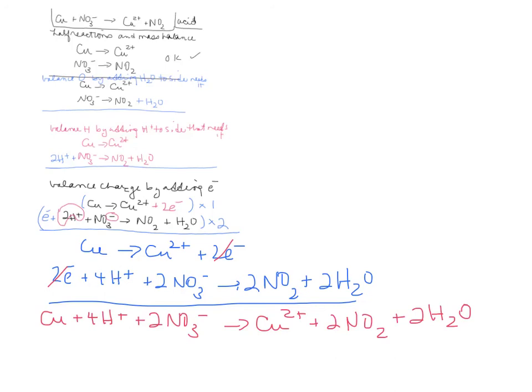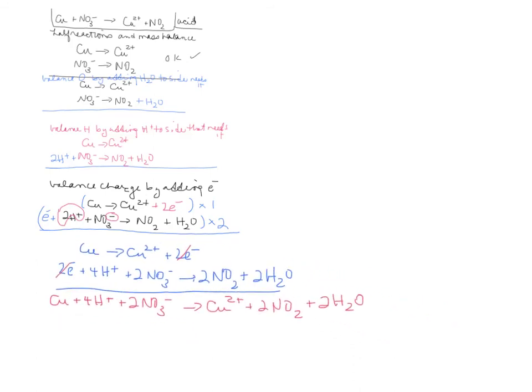That should be balanced. And finally, we want to check to make sure that everything's balanced. And so we're going to count the copper. You've got one on the left, one on the right. Hydrogen, we've got 4 on the left, and 4 on the right. Nitrogen, there's 2 on the left, and 2 on the right. And then oxygen, there's 6 on the left, and 6 on the right. And then the charge, you've got 4 plus and 2 negative, so it's plus 2 on the left, and plus 2 on the right. So that should do it.